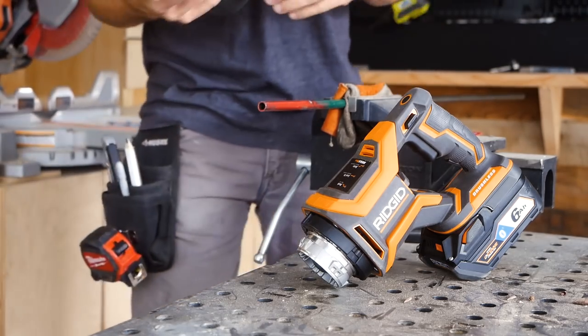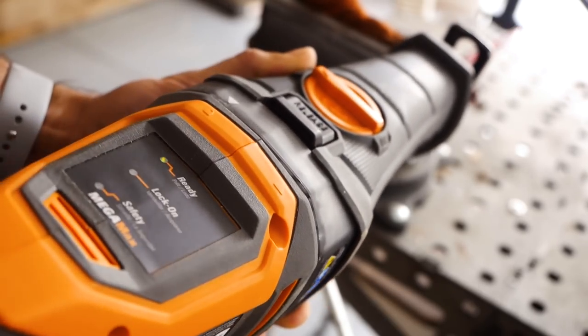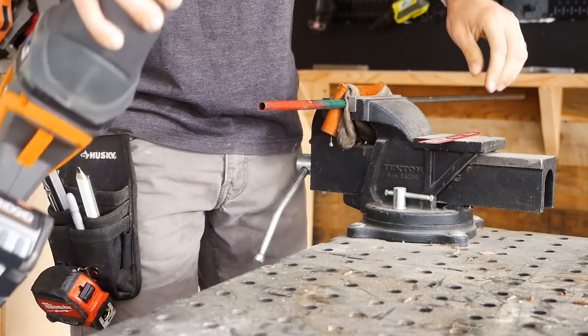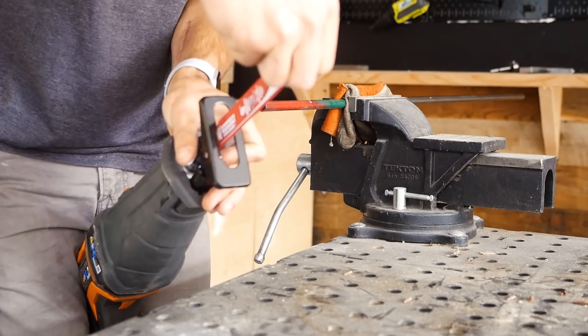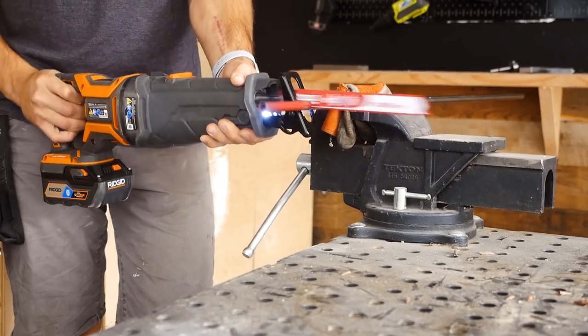So I use my metal cutting setup, which is the rigid mega max. It's the new one, 18 volt brushless with the octane boost power battery, the whole setup with a Diablo metal cutting blade. I'll put a link in the description below. Great metal cutting setup if you don't have anything yet.